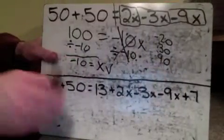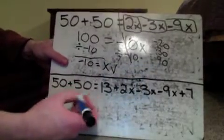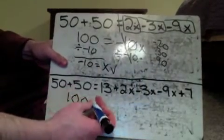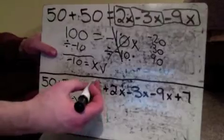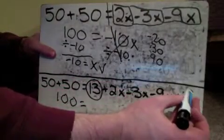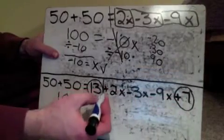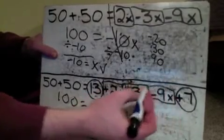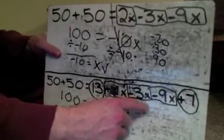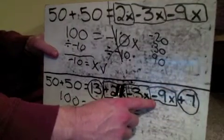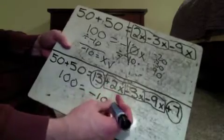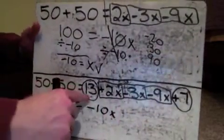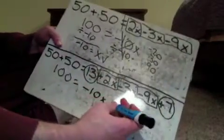For the bottom one, same thing — we've got to combine things together. 50 and 50 is still 100 over here. On this side, it's a little bit different. We have some x's over here and some regular numbers over here. So: negative 3 plus negative 9 is negative 12, and negative 12 plus positive 2 is negative 10, just like it was at the top. So we have negative 10x. But the difference this time is we have those extra numbers — 13 and 7 — those can go together: 13 and 7 would be positive 20.